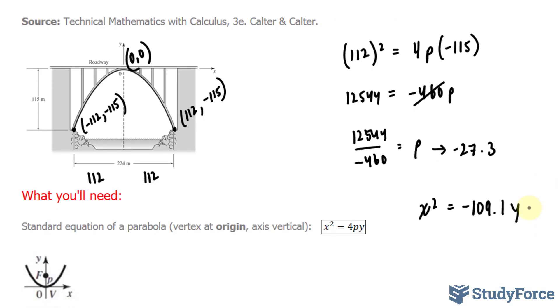This is in standard form. If we want it in general form, we need to have all the terms exclusively on one side. So I'll bring this over where I end up with x squared plus 109.1y is equal to 0. This is in general form. This is in standard form.